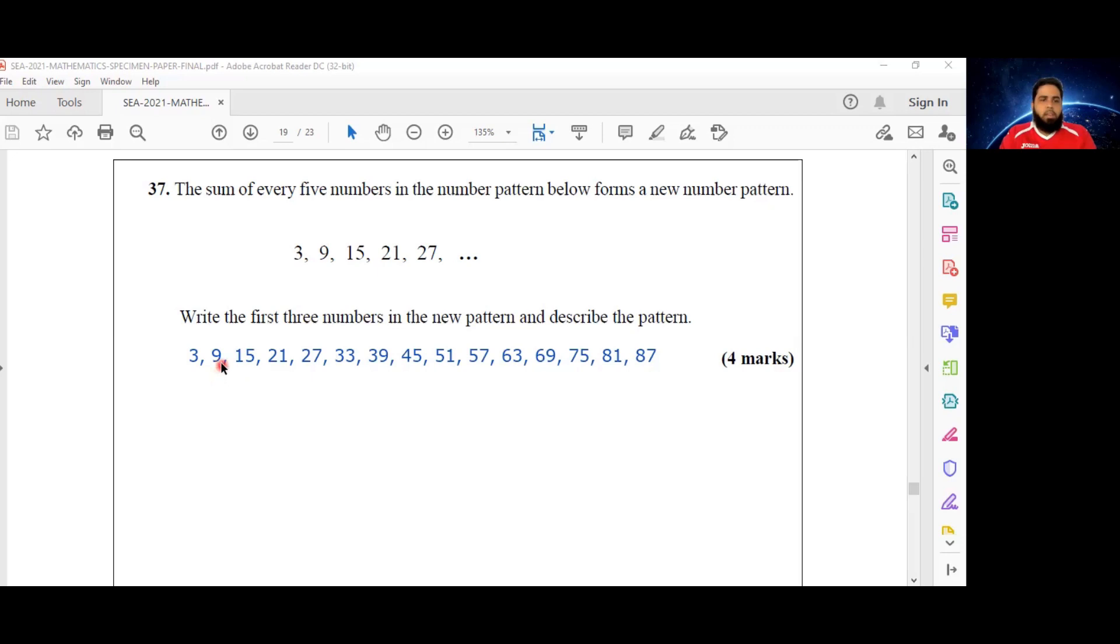And how many terms do I have here? Counting them: 1, 2, 3, 4, 5, 6, 7, 8, 9, 10, 11, 12, 13, 14, 15. All right, so by adding each of these groups of 5, I'm going to get the first three terms in the new pattern.